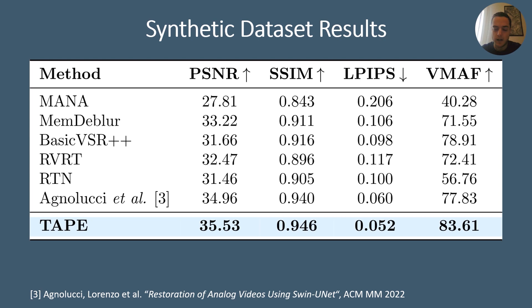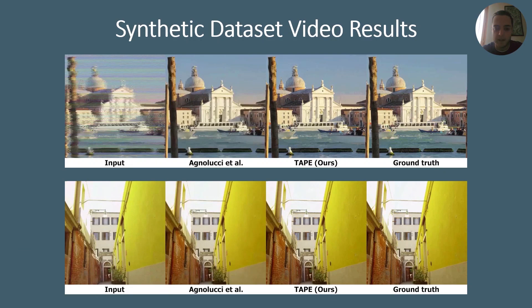Let's take a look at the experimental results. Regarding the synthetic dataset, TAPE outperforms all the baselines on all the metrics. In particular, TAPE achieves the best performance in terms of VMAF, which is a video quality assessment metric that also considers temporal consistency. This proves that our videos contain less motion jitter than the baselines. We compare our approach with the method proposed by Agnolucci et al., which is the best performing baseline for the synthetic dataset.